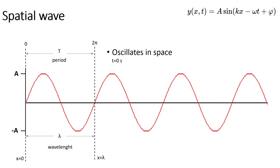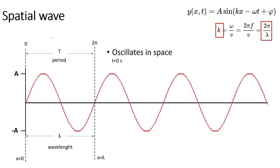Let's begin with the spatial wave. What is a spatial wave? A wave that oscillates in time up and down is a sine wave. It starts at zero, goes to its maximum, then minimum, then maximum again over zero points. We can describe this function as y is a function of space and time: amplitude times sine of kx, where k is defined as the spatial frequency — 2π over lambda, where lambda is the wavelength. Going from zero to 2π covers one full wavelength.